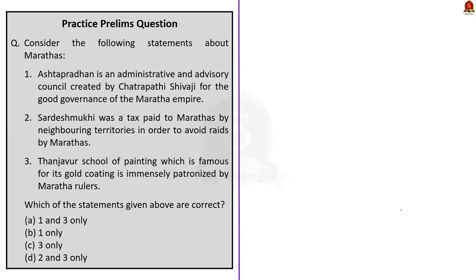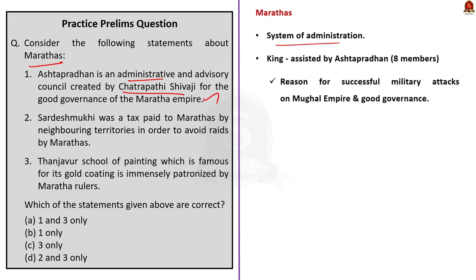Now let us move on to the next question about the Maratha Empire. The first statement says that Ashtapradhan is an administrative and advisory council created by Chhatrapati Shivaji for the good governance of the Maratha Empire — this statement is correct. Chhatrapati Shivaji established a sound system of administration where the king was the most important part. To advise and aid the king, Shivaji established the Ashtapradhan council consisting of eight members who assist the king in all matters, contributing to successful military attacks on the Mughal Empire and good governance.